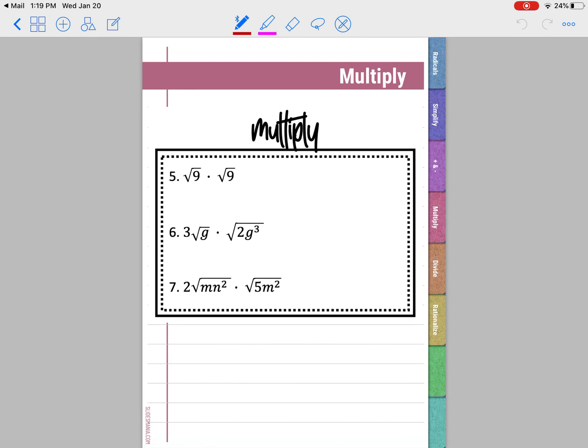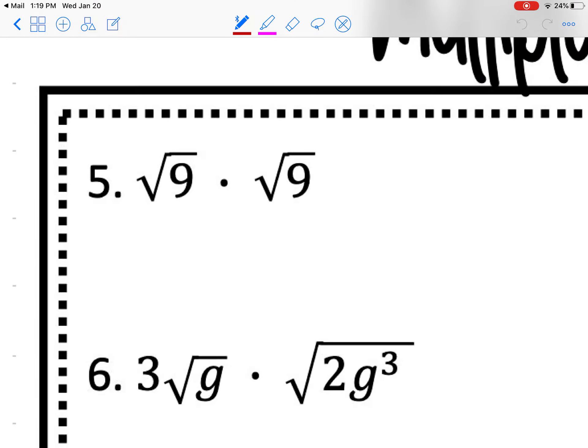All right, multiplying. Multiplying, you're just going to multiply outside times outside, inside times inside. So if we look here, we can assume that there's 1s here. So 1 times 1 is 1. Then we can multiply the inside. So 9 and 9, which gives me 81. I know 81 is the perfect square. And so that would be 9.